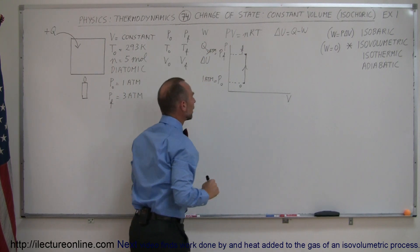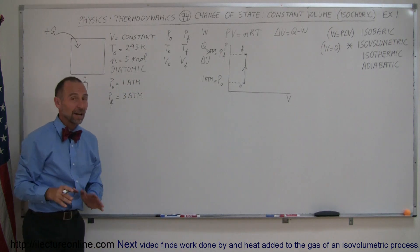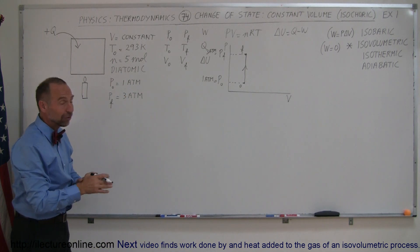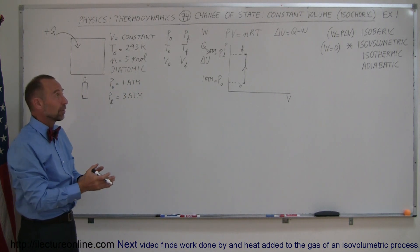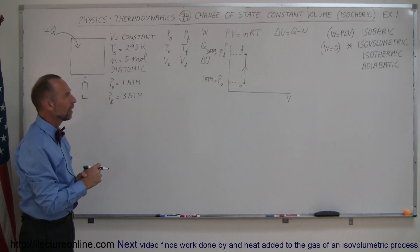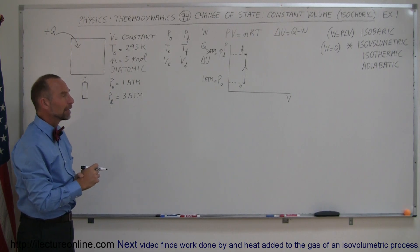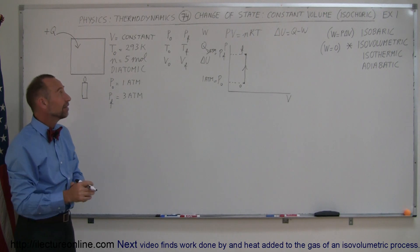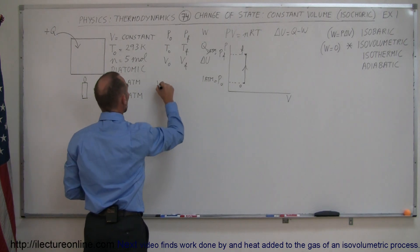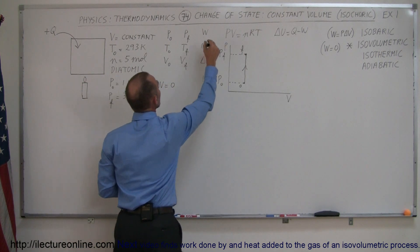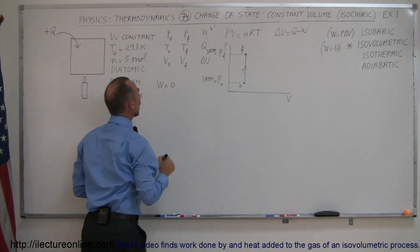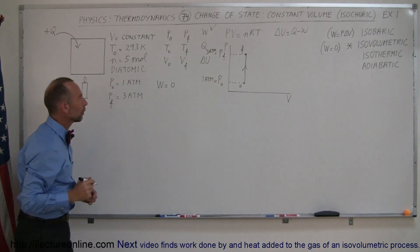The first thing that jumps out is that since this is an isovolumetric — or isochoric — process, the work done is equal to zero. So we've already solved for one of those variables.